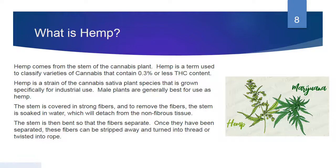Hemp comes from the stem of the cannabis plant. Hemp is a term used to classify varieties of cannabis that contain 0.3% or less of THC content. Hemp is a strain of the Cannabis sativa plant species grown specifically for industrial use. Male plants are generally best for use as hemp — and remember, the female plants are the ones that get you high, whereas male plants have very low levels of THC. So we're not getting rid of our male plants — we're going to use them to grow industrial hemp.